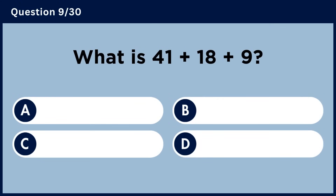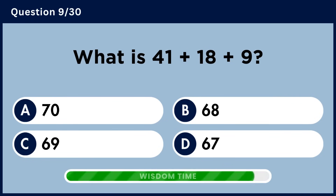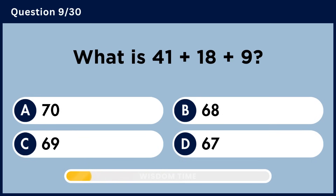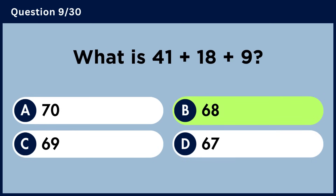What is the total of 41, 18, and 9? Answer B, 68.